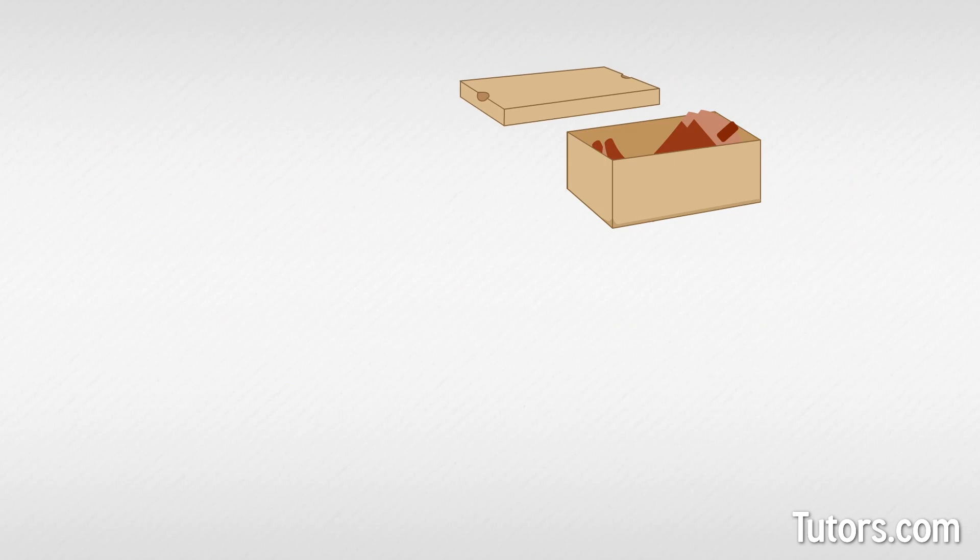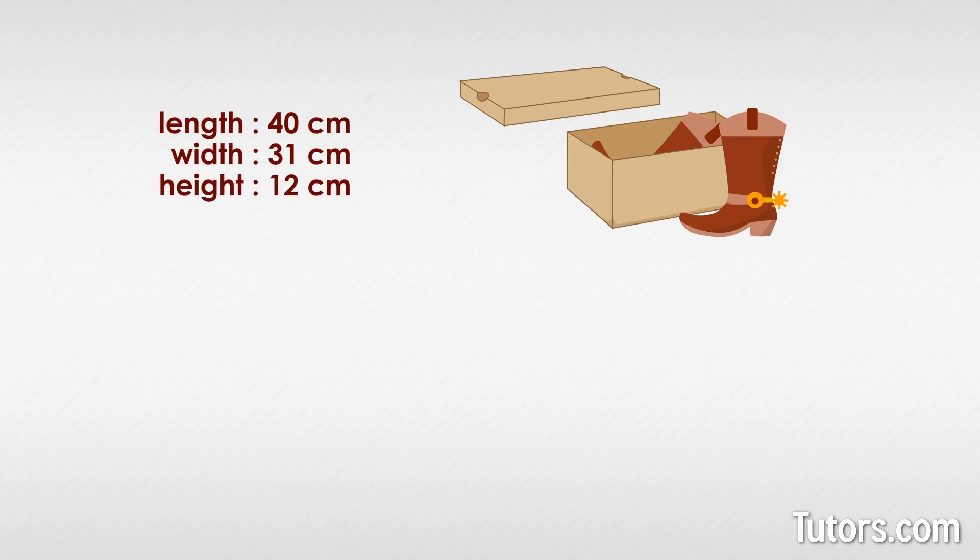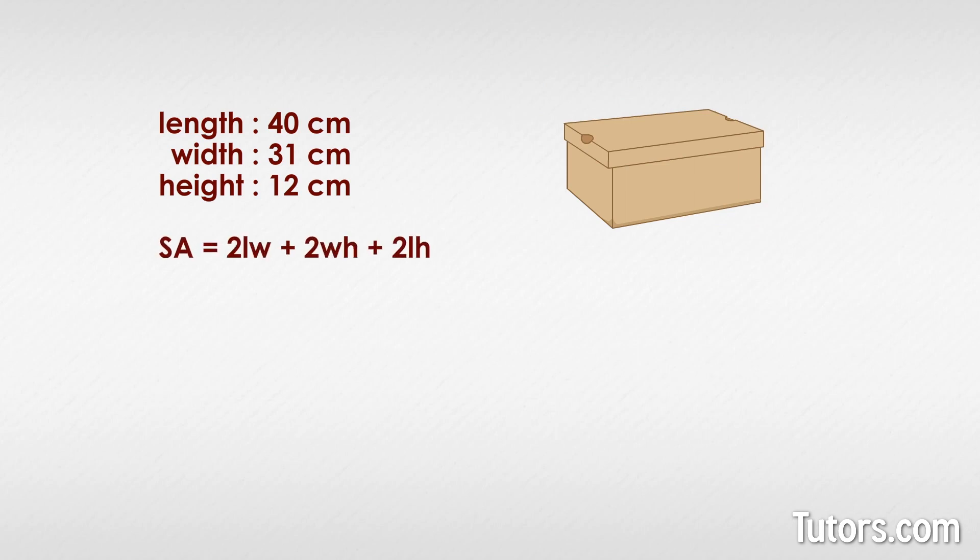Here is a box for cowboy boots. The box measures forty centimeters long, thirty-one centimeters wide, and twelve centimeters high. You must wrap these boots for a present. What is the total surface area of the box in square centimeters so you buy enough gift wrap? First, we plug our numbers into our formula. Then we do the math until we arrive at our answer. And our answer is the surface area equals four thousand one hundred eighty-four centimeters squared.